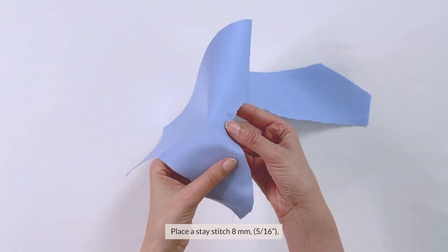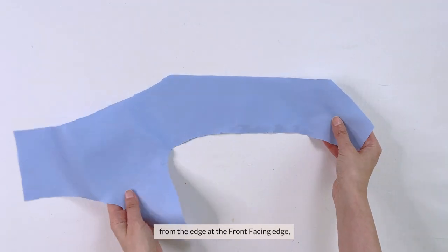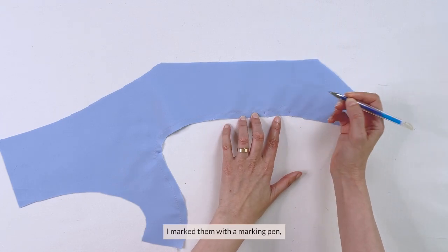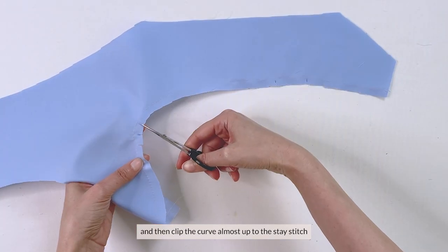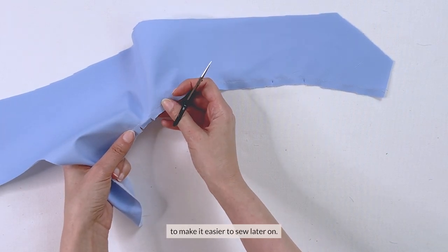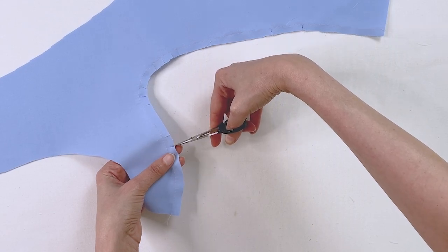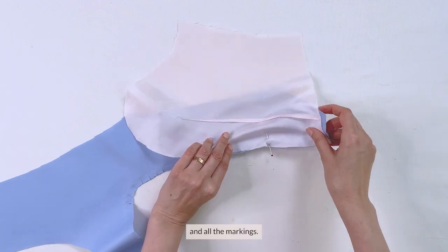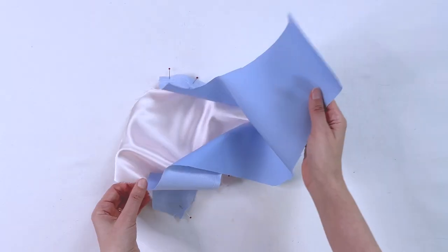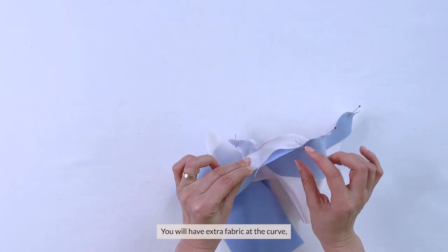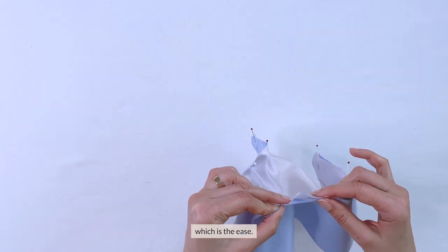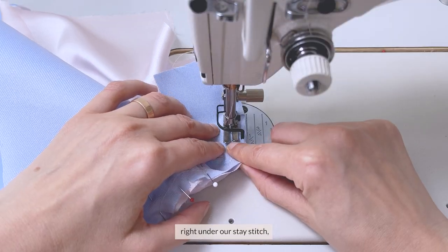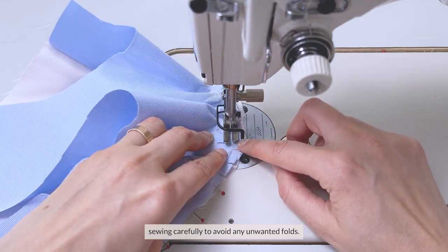Place a stay stitch 8 millimeters or 5/16th of an inch from the edge at the front facing edge so it's less than our seam allowances and making sure that you can differentiate the notches. I marked them with a marking pen and then clip the curve almost up to the stay stitch to make it easier to sew later on. Then pin the lining to the front facing right sides together first matching the bottom edge and all the markings. You'll have extra fabric at the curve which is the ease. You can either distribute this evenly or make small pleats just like this. Sew from the facing side right under our stay stitch sewing carefully to avoid any unwanted folds.